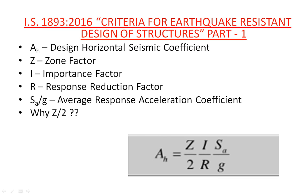Where Z in the formula represents the zone factor of the city or area under consideration for analysis. I represents the importance factor of the structure, whether it is a hospital or a residential building. R represents the response reduction factor of the structure, whether it is an ordinary moment resisting frame or special moment resisting frame. SA/G is the average response acceleration coefficient, which depends on the soil strata at the foundation level.